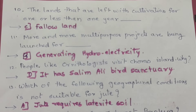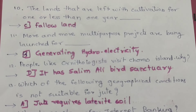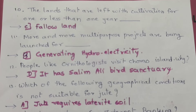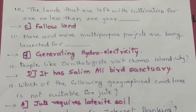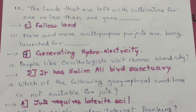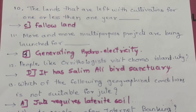Question 12: People like ornithologists visit Chorau Island, and the correct option is D — it has Salim Ali Bird Sanctuary.